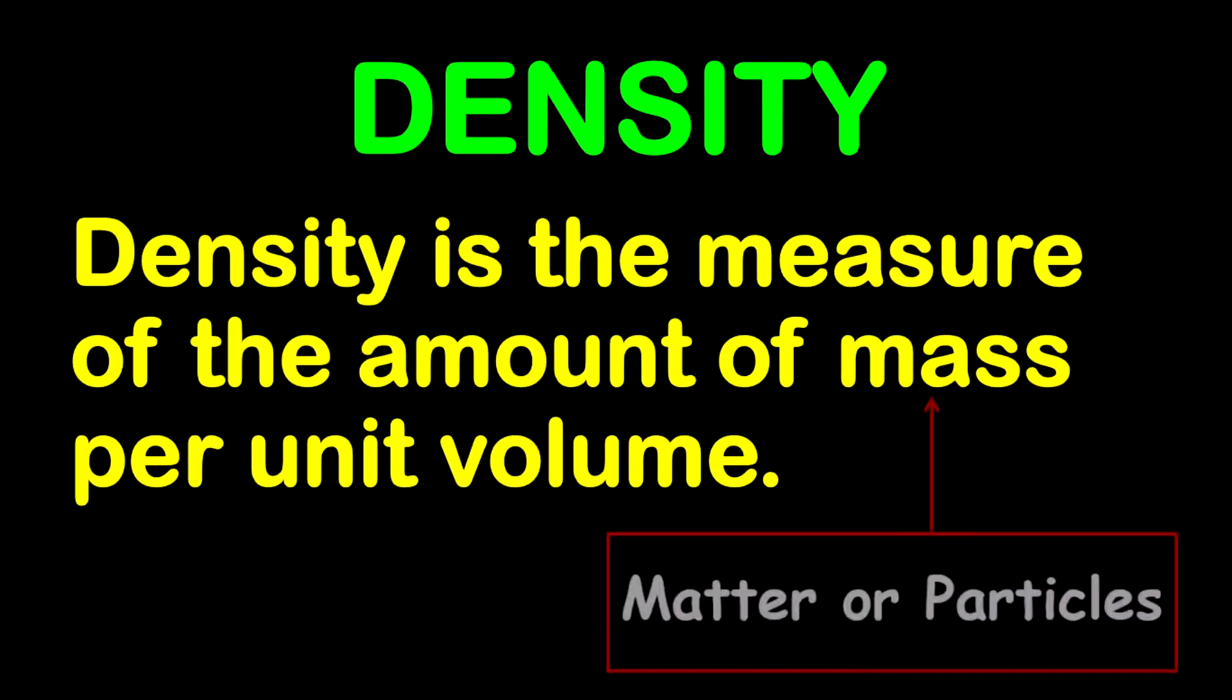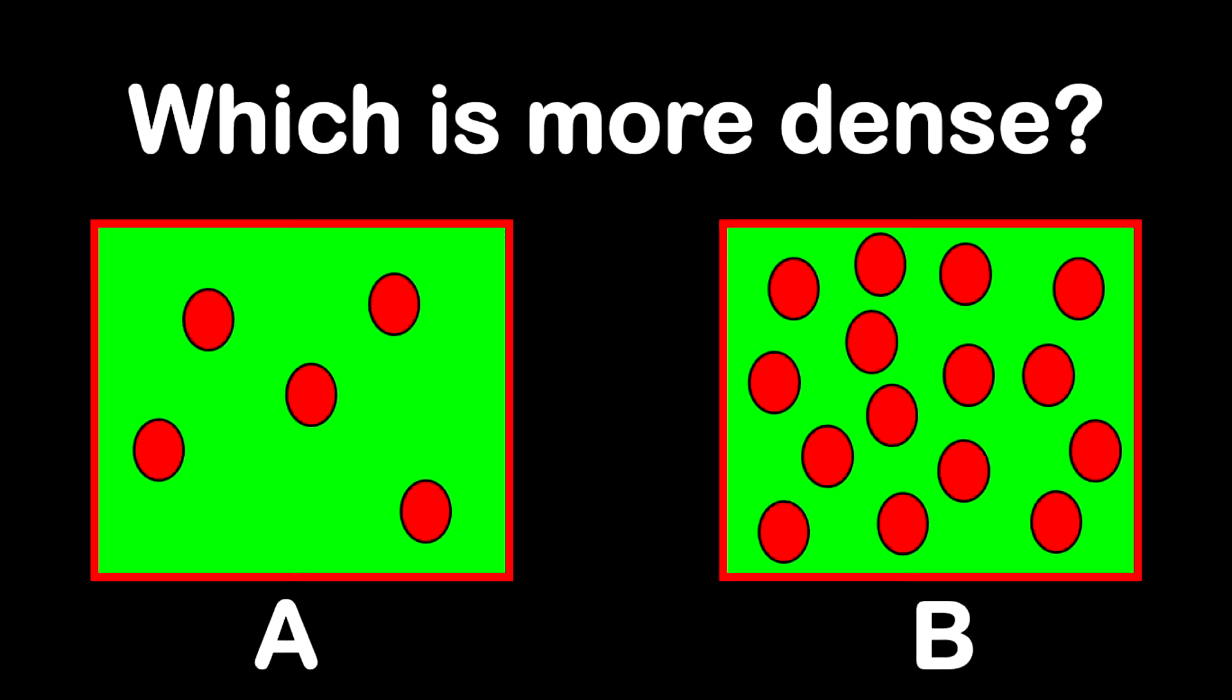Now based upon this, let us look at a question. Now look at object A and object B and determine which one you think is more dense. Absolutely, object B will be more dense simply because it contains more particles within that given volume. Awesome going.